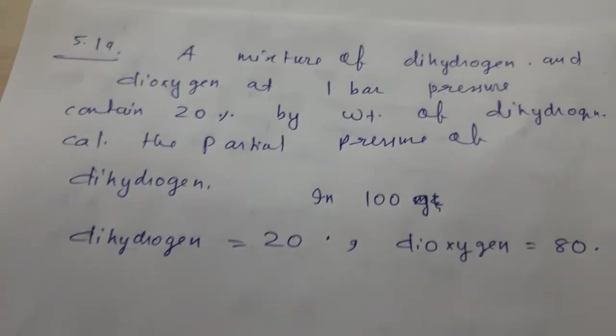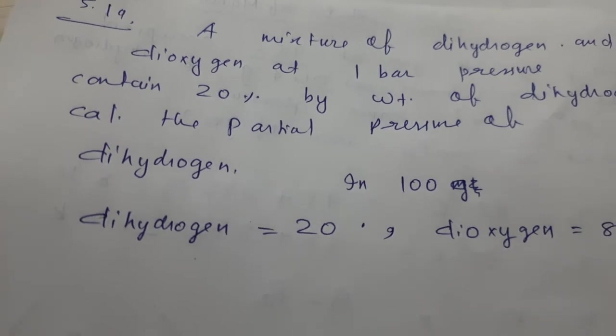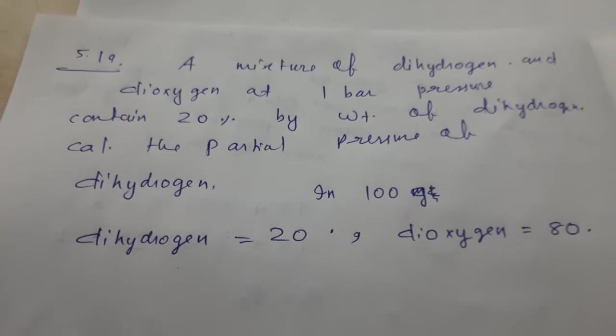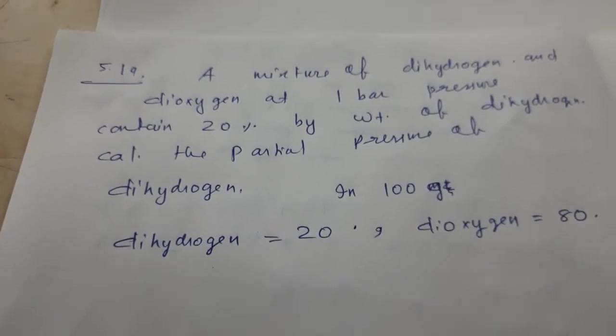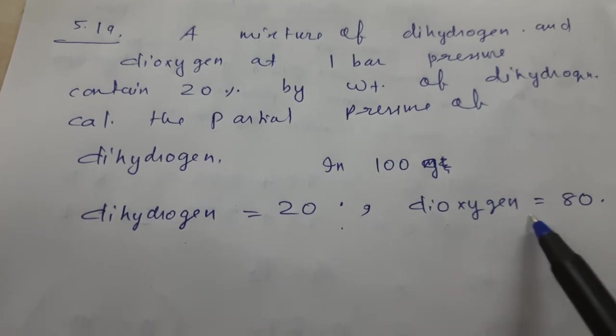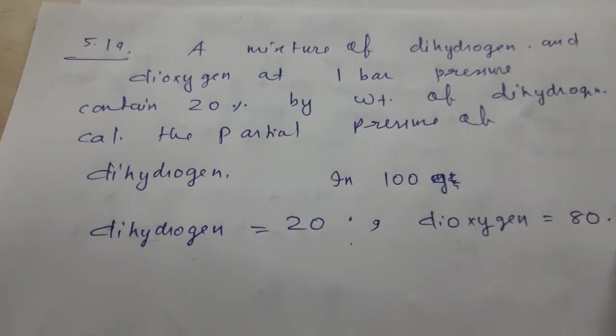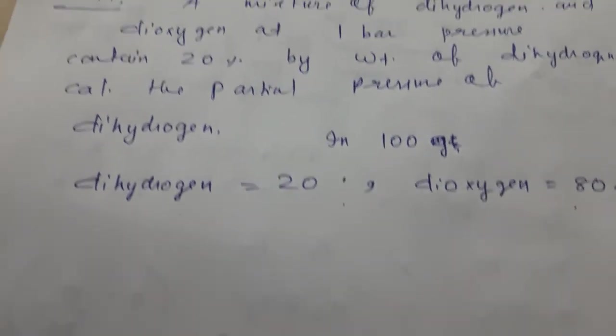Next question we will do. A mixture of dihydrogen and dioxygen at one bar pressure contains 20% by weight of dihydrogen. So suppose there are 100 grams, then 20 grams will be dihydrogen. So dihydrogen is 20 and dioxygen, how much remains? Both are in the mixture, so it is 80. So 20, 80, you understood? Percent means it will be this.